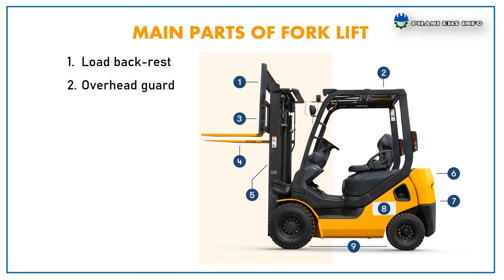Overhead guard: this section of the forklift protects operators from a load if it falls. Carriage: the carriage is the base of the forklift and is fixed on the mast rails, which easily move up and down. Forks: these are the prongs that carry loads.